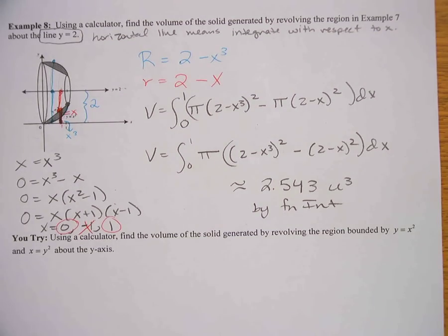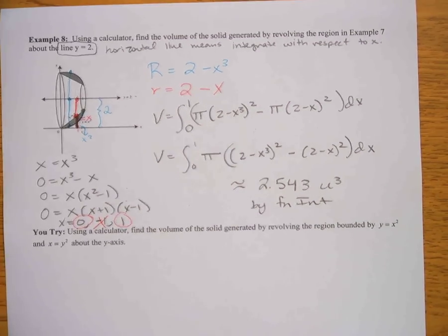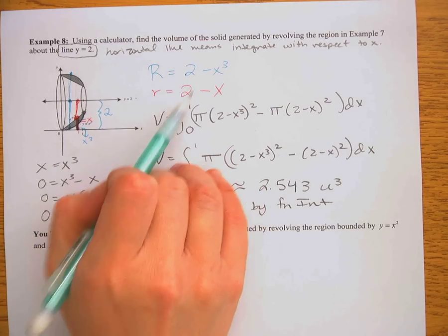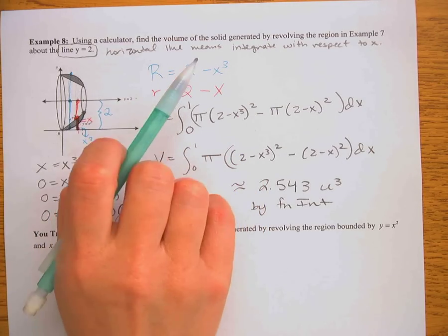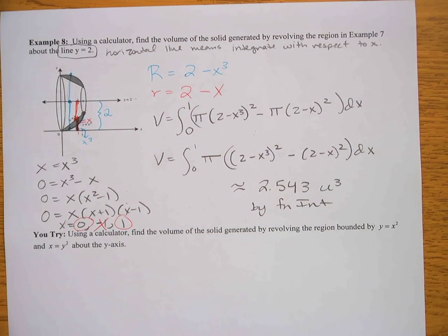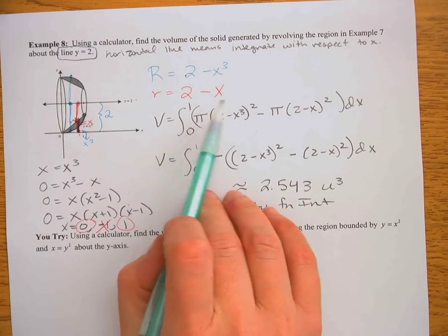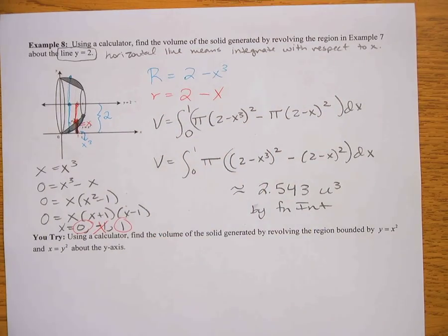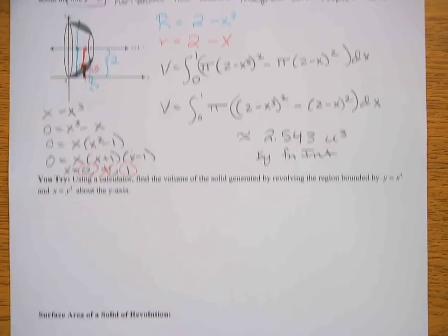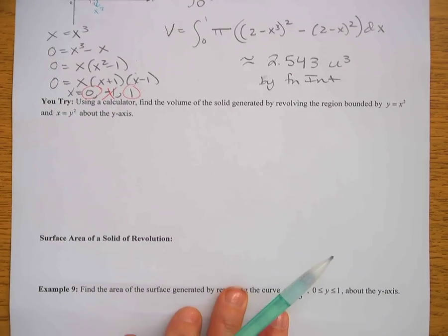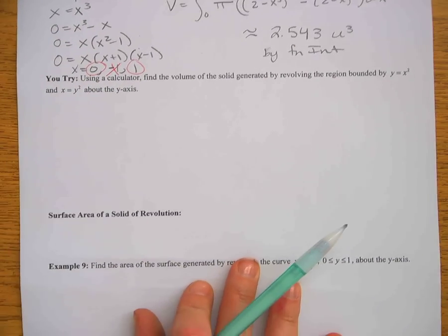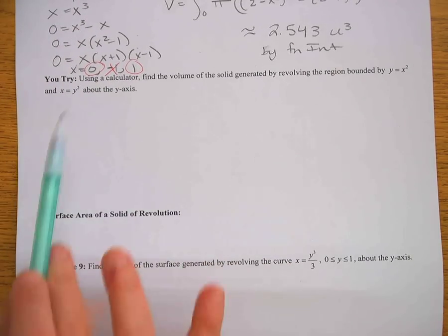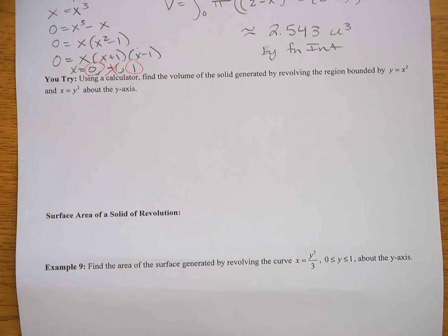That one was definitely a little trickier — finding those radii is really the tricky part. Once you find the radii, it's a piece of cake: pi times big R squared minus pi times little r squared. Pause the video at this point, try the next one out, and then come back and check how you did.